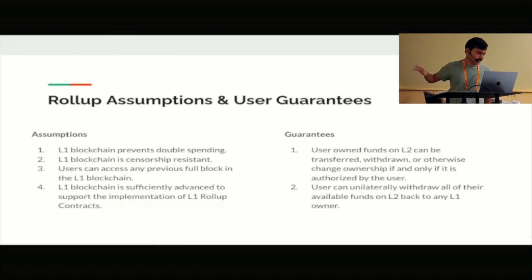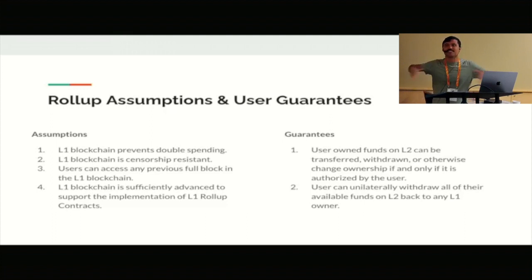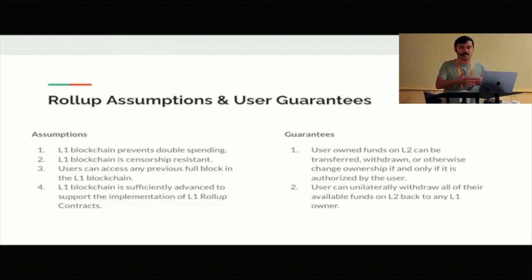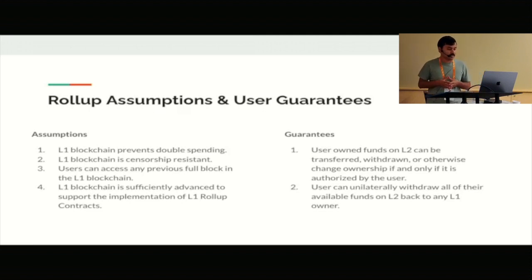That is the goal of validity roll-ups, and why this would be a significant improvement to sidechain models we have today. To formalize that, we look at a set of assumptions on the L1, and with just those assumptions, we want to arrive at two guarantees. The first assumption is that the L1 blockchain prevents double spending — which consists of sub-assumptions about SHA-256, the elliptic curve we use, etc. The L1 blockchain is also censorship resistant.